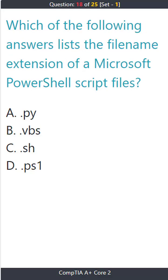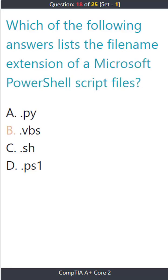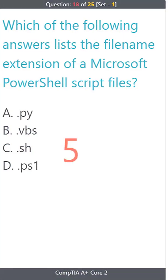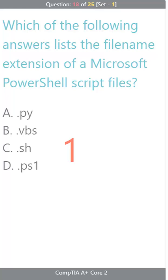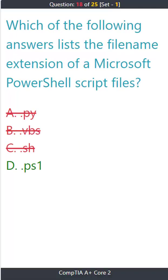Question 18: Which of the following answers lists the file name extension of a Microsoft PowerShell script file? A) .py. B) .vbs. C) .sh. D) .ps1. The correct answer is D: .ps1.